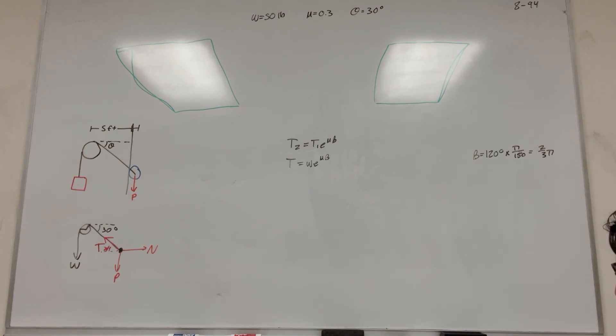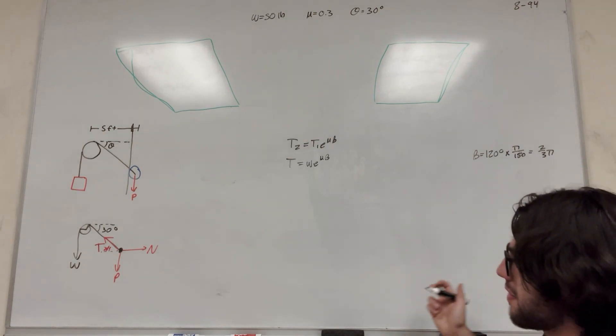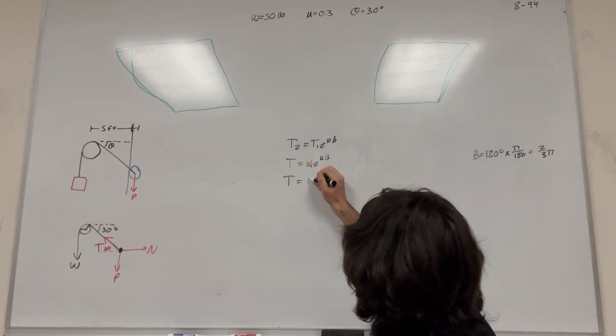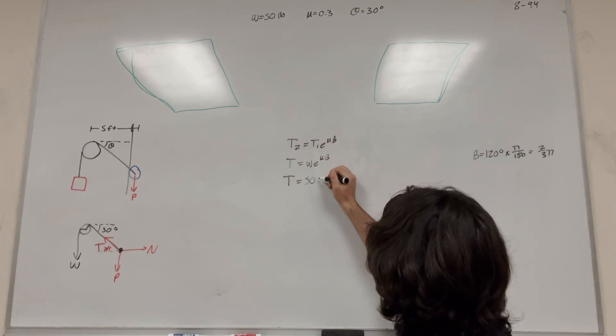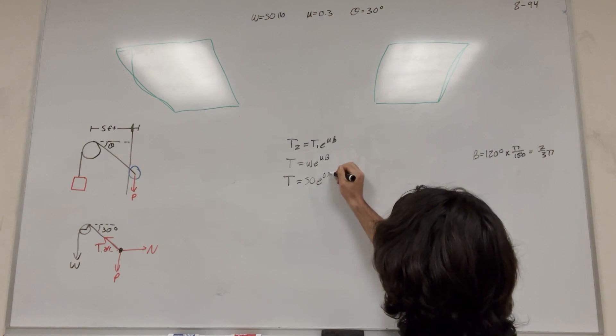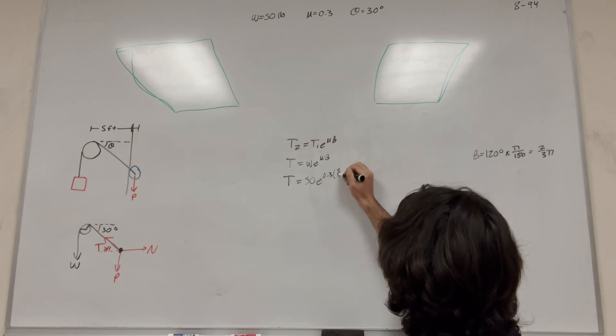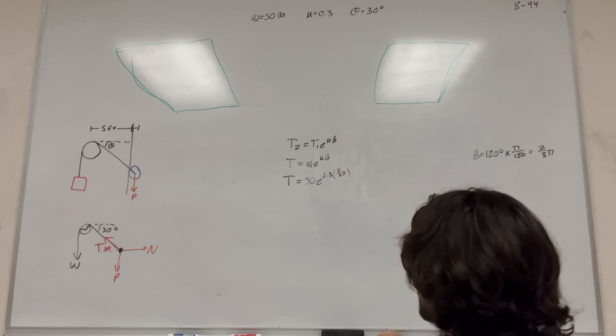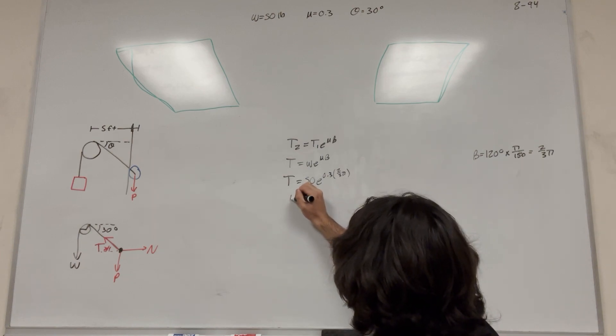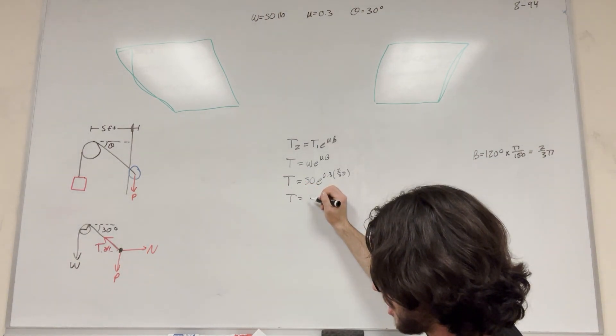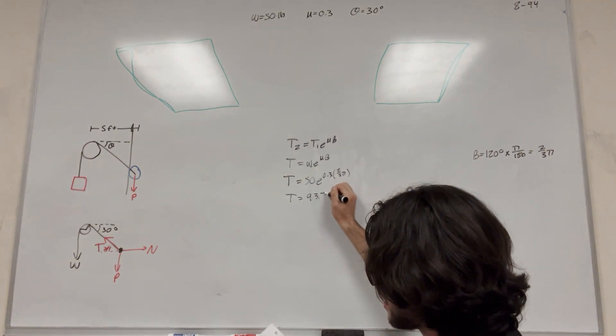So that's the number that we're going to use. So then let's go ahead and find tension. So tension is equal to weight, 50 pounds, E to the coefficient of static friction, times beta, 2 thirds pi. So you do this, and you get that tension is equal to 93.7 pounds.